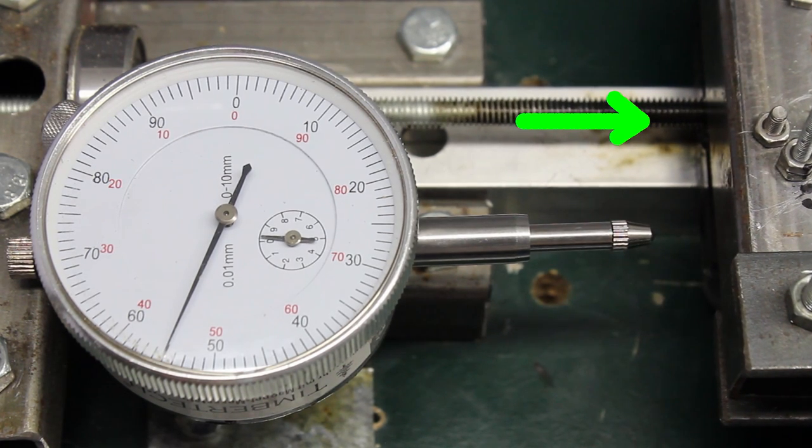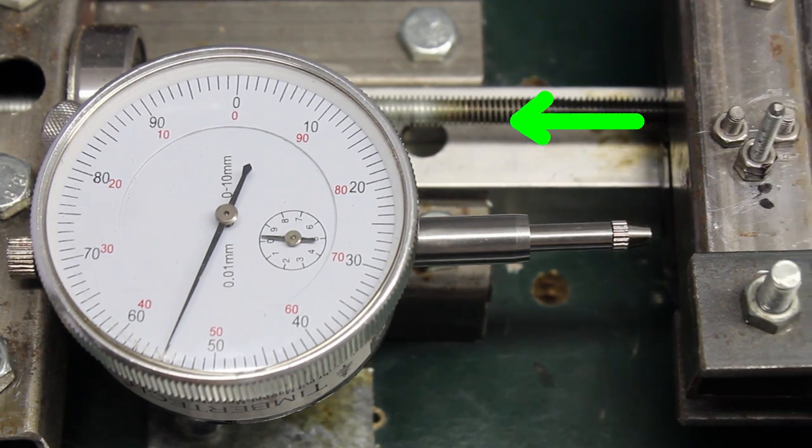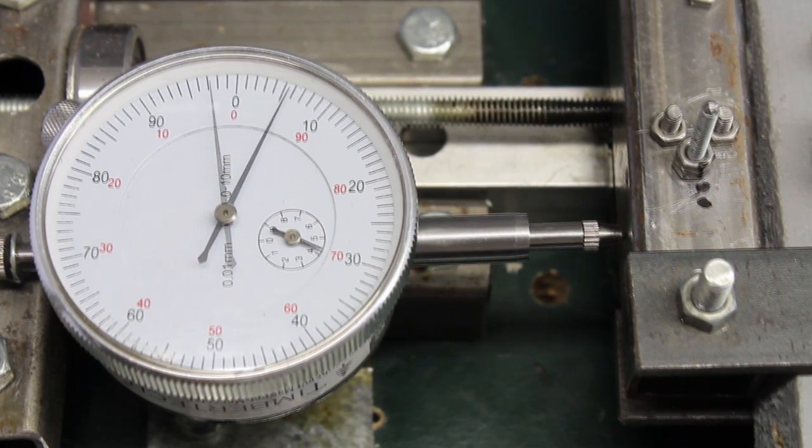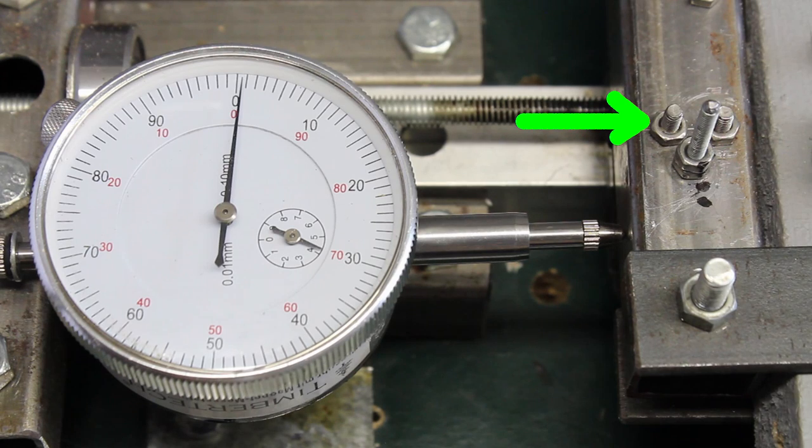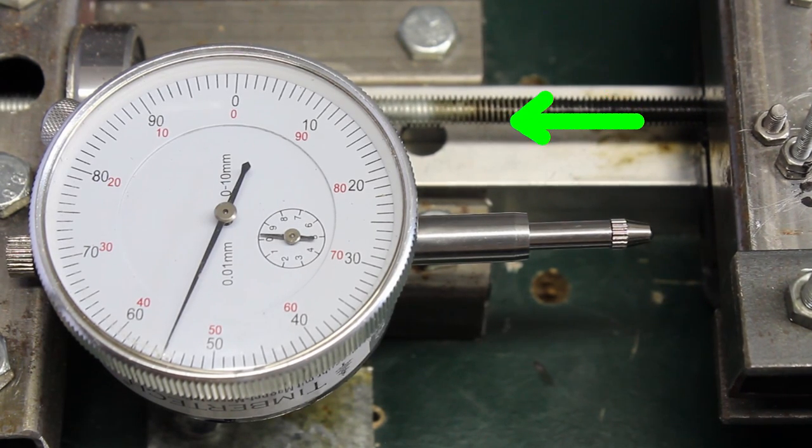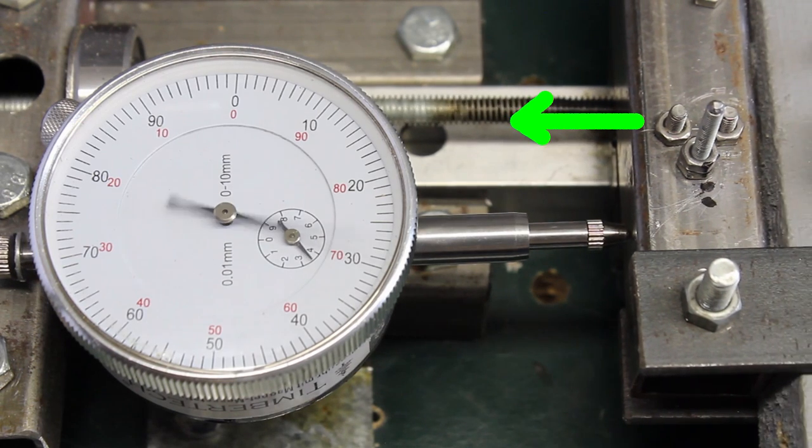Under side load we get an error of 30 micrometers when changing the direction of movement. Without the load carriage we get just 5 micrometers.